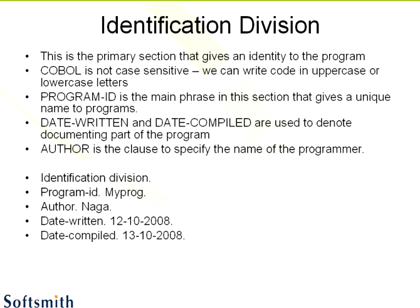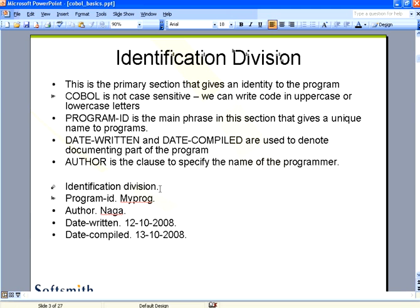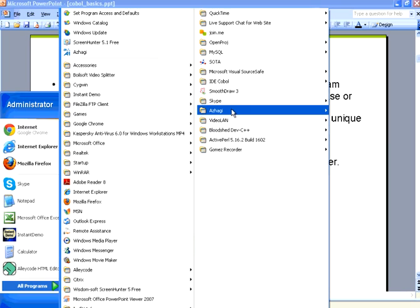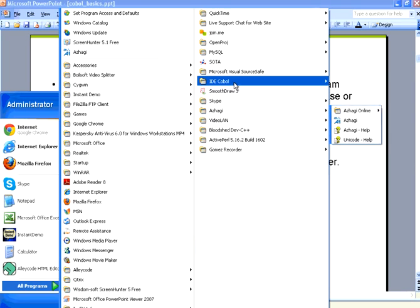So this is the standard structure. The identification division is the key one — the first one will always have PROGRAM-ID, which is the name of the program. Now I am going to jump into the COBOL program itself. To do COBOL programming, you can download IDE COBOL.